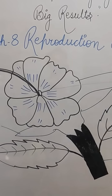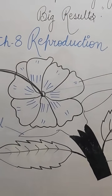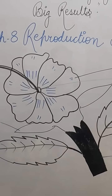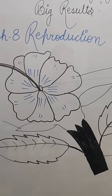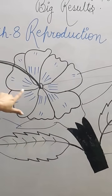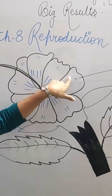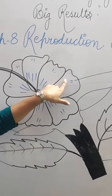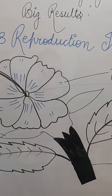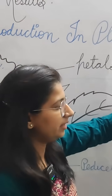This part is the stigma. The stigma has three parts: stigma, style, and ovary. These leaves we call petals. And this thin line you can see here is known as the filament.